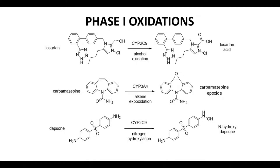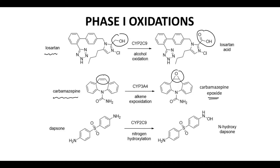Let's race through a number of reactions. These are all oxidation reactions. The first involves Losartan. Losartan gets oxidized — notice that it has a primary alcohol, and that alcohol is oxidized to a carboxylic acid. Carbamazepine, the middle structure, has an alkene. Alkenes are potential sites for oxidation; in this case, we form an epoxide off of that alkene. Finally, in the bottom structure, we have dapsone. Sometimes oxidations occur on heteroatoms like nitrogens and even sulfur — here we have an NH2, and we get a hydroxylamine as a product. All these reactions are performed by different isoforms of the cytochrome P450s.